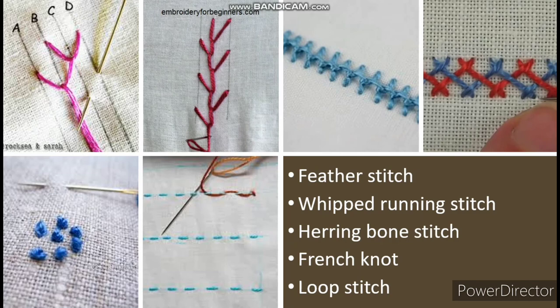French knot stitch makes a pretty dot-like design throughout your project, and you even need two hands to pull it off — but don't worry, it is not tough. First, bring the needle and floss up through the fabric. Then wrap the floss around the needle twice. Hold the floss taut and bring the needle down just next to the space where it came through the fabric. Keep holding the floss taut as you pull the thread through. You can vary the size of your French knots by wrapping the floss around the needle anywhere between one and three times.